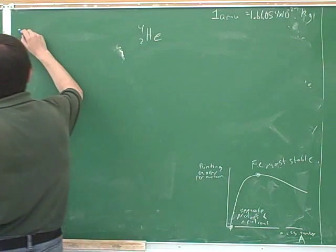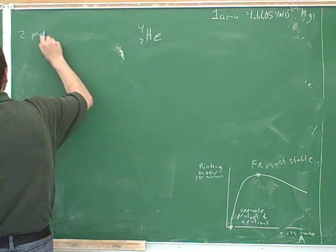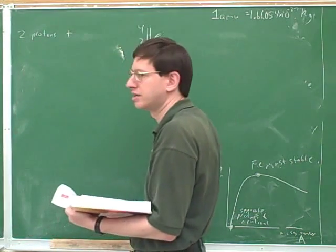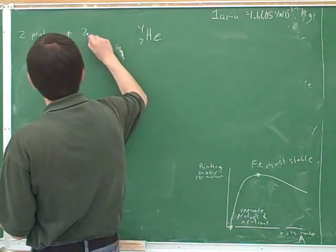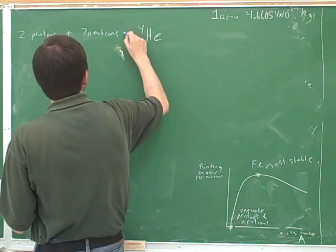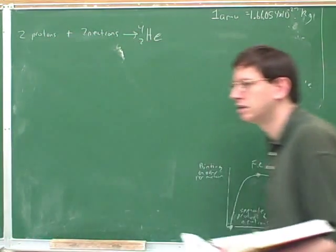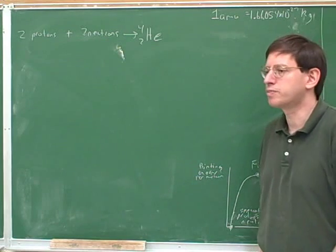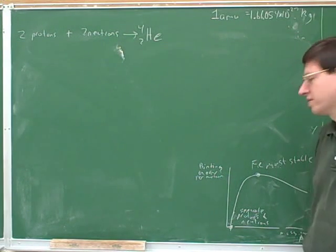And how many neutrons? Two. Good, two protons and two neutrons makes a helium nucleus.